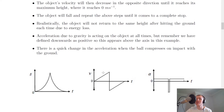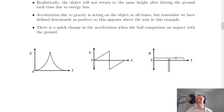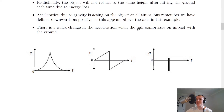Realistically the object will not return to the same height after each bounce due to energy loss, so unless a question says to ignore energy losses we should show a gradual decrease in maximum velocity. For the acceleration-time graph, gravity acts at all times. Since downwards is defined as positive here, gravity appears above the axis at positive 9.8 meters per second squared. There is also a brief dip in the acceleration graph during each bounce, representing the compression of the ball on impact with the ground.